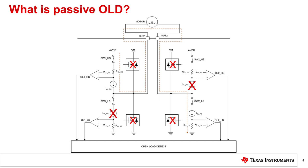The diagnostic current must be very small to avoid load rotation. To activate passive OLD, a command is sent by the user to the motor driver. For each half-bridge's driving FET, there is one OLD current source, a switch, and a resistor or diode. These components work together to allow the flow of diagnostic current from an internal supply called AVDD to the load and from the load to ground. OLD comparators monitor the voltage on each driving FET's OLD circuit.